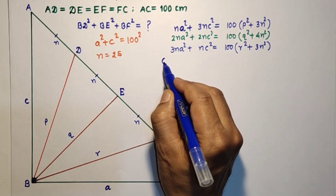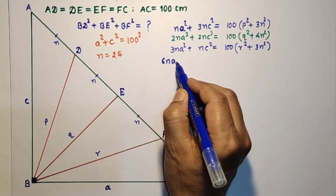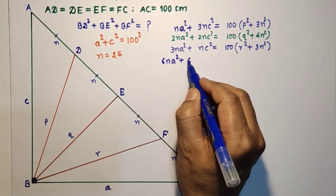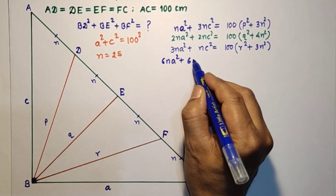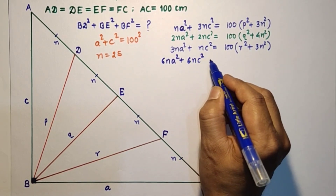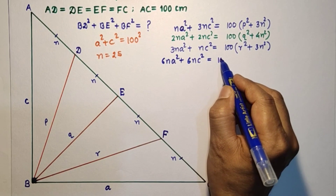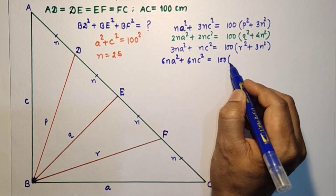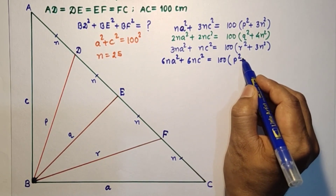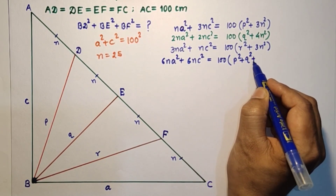Adding the three equations together, the left side gives 6N·a² + 6N·c² = 6N(a² + c²), and the right side is 100(P² + Q² + R²) plus 10N².